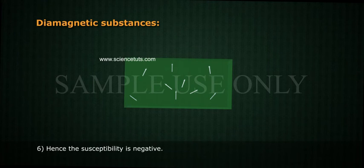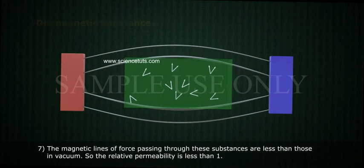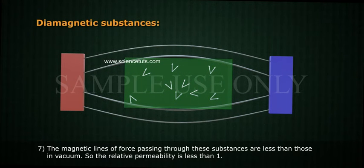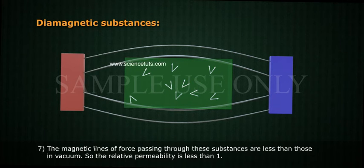Hence, the susceptibility is negative. The magnetic lines of force passing through these substances are less than those in vacuum, so the relative permeability is less than 1.